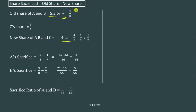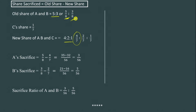New share is calculated using the new share formula. So 4 by 7 is the new share for A. For B, the old share is 3 by 8, and the new share becomes 2 by 7. First we look at A and B's old shares, then the new partner's share.